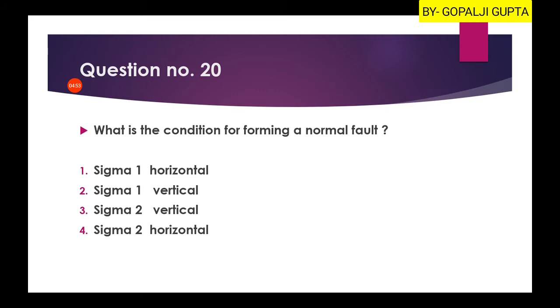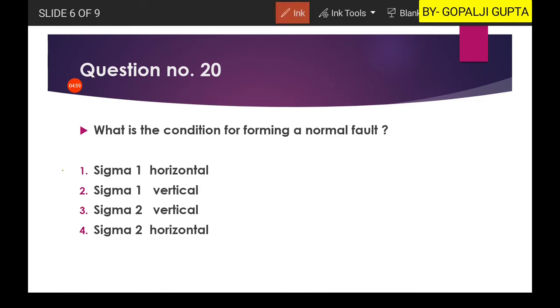Now next question is what is the condition for forming a normal fault? Either sigma 1 is horizontal, sigma 1 vertical, sigma 2 vertical, or sigma 2 horizontal. So for any condition of the normal fault, you should have a sigma 1 which is vertical. Now if you know that a normal fault will lead to the crustal lengthening, that means crust will increase in the length.